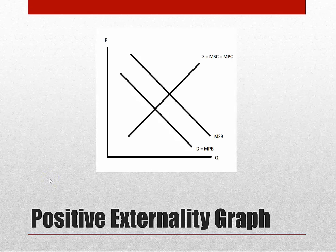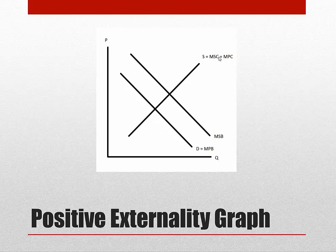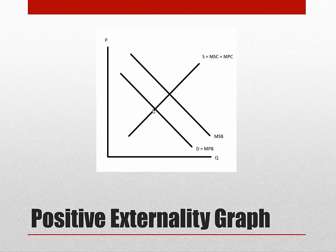This graph here shows positive externalities. In this graph, there are three lines: one for the MPC, one for the MSB, and one for the MPB. The MSC, or marginal social cost, is equal to the marginal private cost, because this is a positive externality. Therefore, the only cost to society is the cost to produce it — it doesn't hurt society at all. The equilibrium output is where the marginal private benefit is equal to the marginal social costs. However, there is more benefit to be captured. The government can opt to subsidize production to increase output to where MSB is equal to MSC. The difference between the MSB and the MPB line is called the externality.